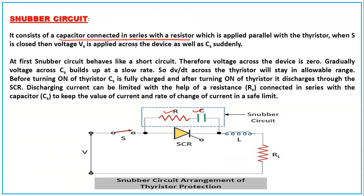When the switch S is closed, voltage Vs is applied across the device as well as the capacitance Cs. Since the thyristor is not yet on and no gate pulse is given, Cs will get charged. At first, the snubber circuit behaves like a short circuit, so the voltage across the device will be zero. Then gradually, the voltage across Cs builds up at a slow rate, keeping dv/dt across the thyristor within the allowable range.